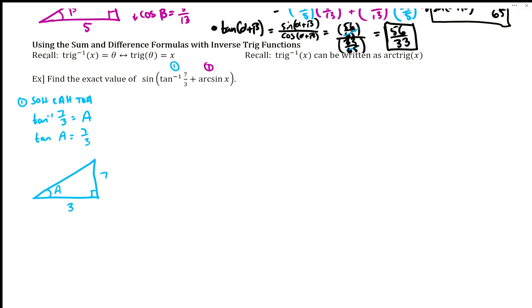Now we can get this missing side using Pythagorean's theorem. With Pythagorean's theorem we've got three squared plus seven squared equals the hypotenuse squared. So we've got nine plus 49 is the hypotenuse squared. That gives us 58 equals the hypotenuse squared. When we square root both sides, we would put plus minus for good habit, but we're going to choose the positive on this problem because our tangent inverse of seven-thirds is positive.